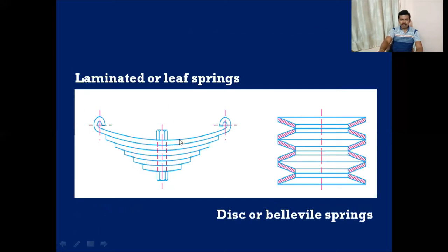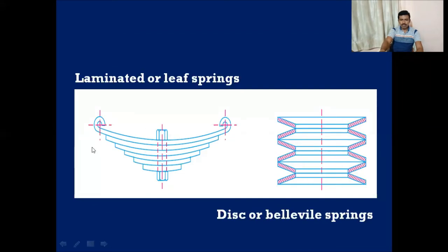The leaf spring is generally provided with a number of flat plates with a large curvature. These plates are bundled together and held by a central bolt, and this entire unit is placed on the axle with the truck body placed on top. When load is applied the curvature disappears and the curved strips become flat; when load is removed the curvature returns. The detailed construction will be discussed in subsequent classes.